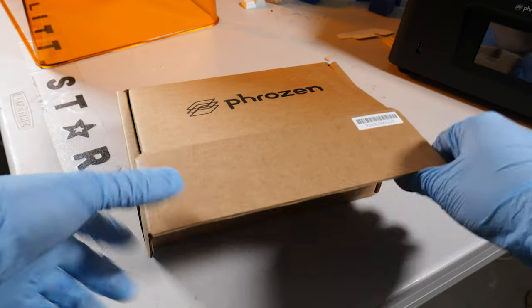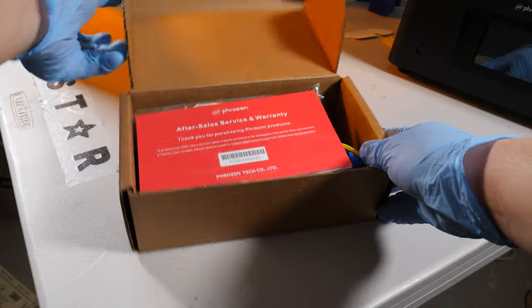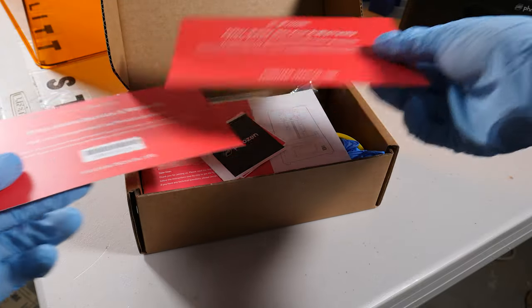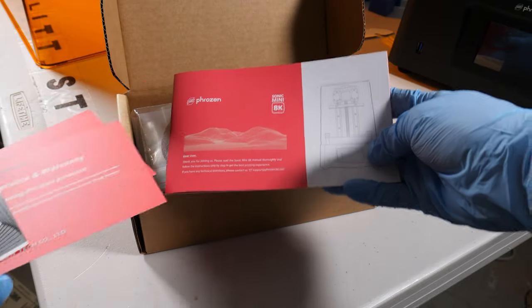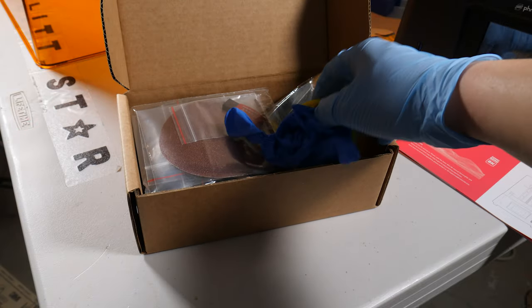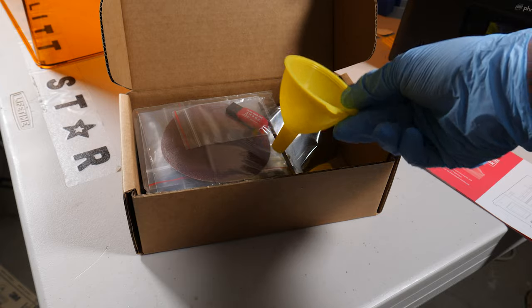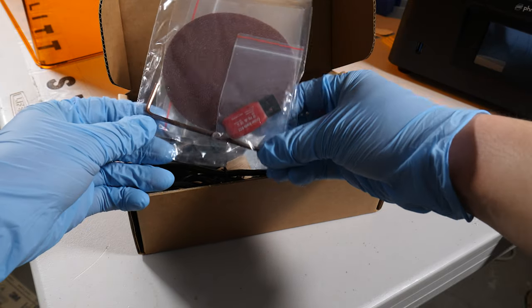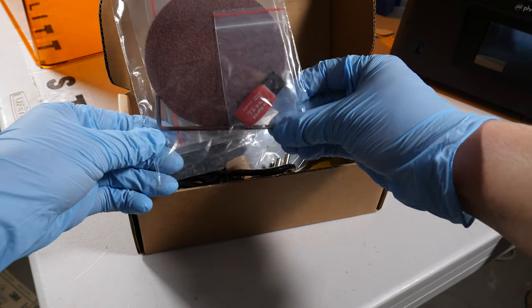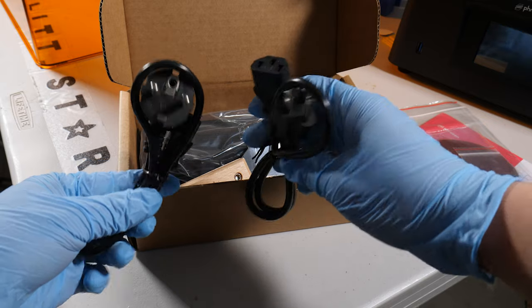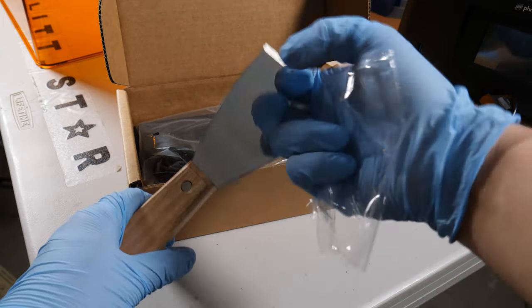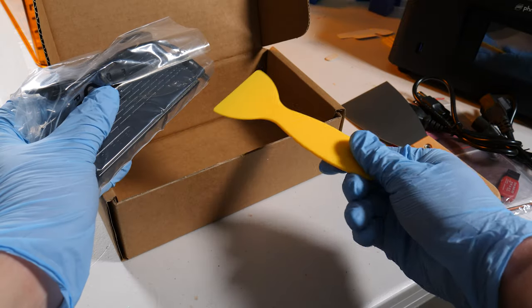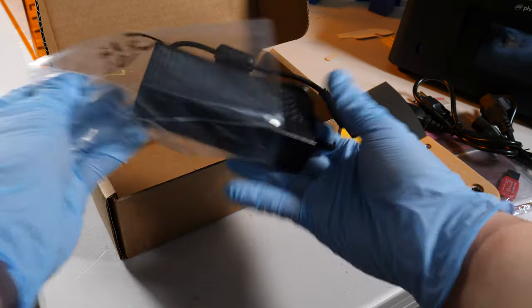So besides the printer itself, let's look at what else came in the box. We have our warranty information as well as some stickers. We've got our instruction manual, one pair of nitrile gloves, a funnel for the resin, sanding pad, a USB drive, and a hex key. We've got our power cords, a metal scraper which is a lot nicer than I thought it would be, a plastic scraper, and lastly the power brick.